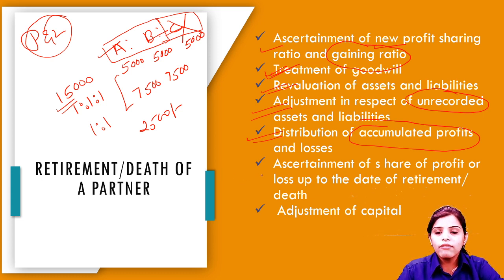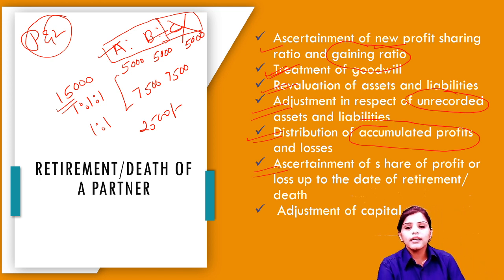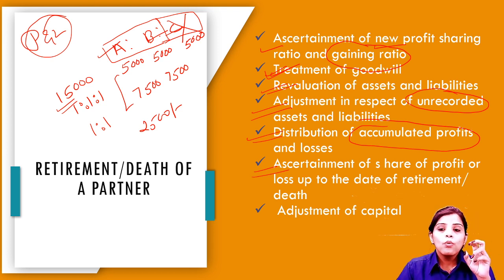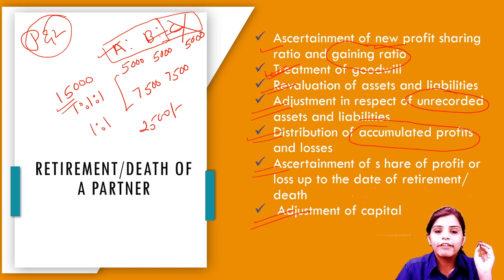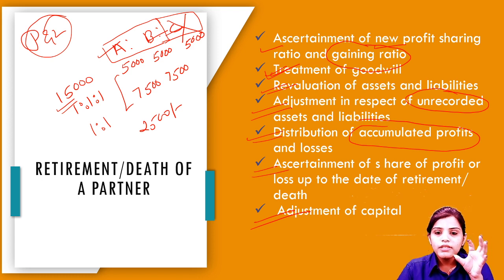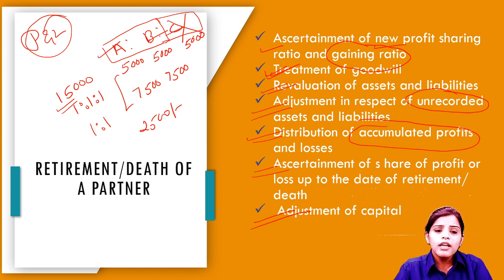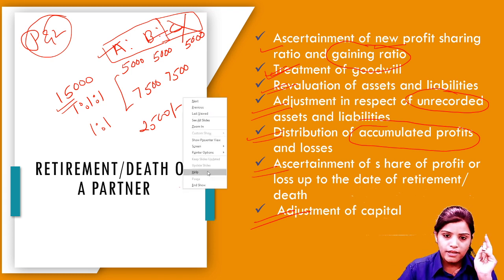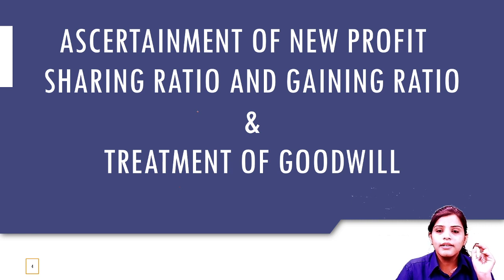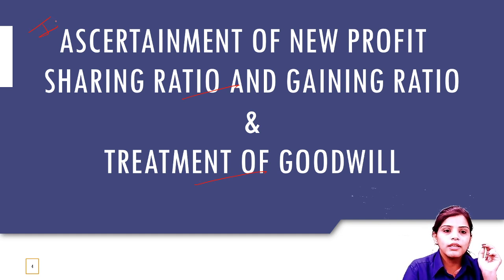Settlement of profit and loss to date of retirement — यह calculate करना कि जिस दिन partner retired हो रहा है, उस दिन उसका share of profit या loss कितना है — जो retired या deceased partner है, उसके share की calculation करना। सबसे last point: adjustment of capital — how to adjust the capital। Retirement of partner और admission of partner — दोनों में काफी सारे points बहुत similar होते हैं। अगर admission of partner अच्छे से समझ आया है, तो retirement of partner में इतनी problems नहीं होगी।